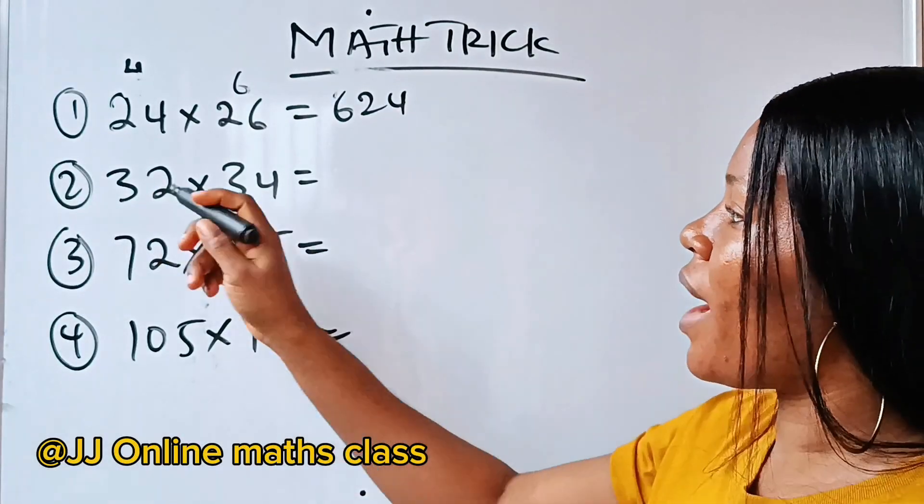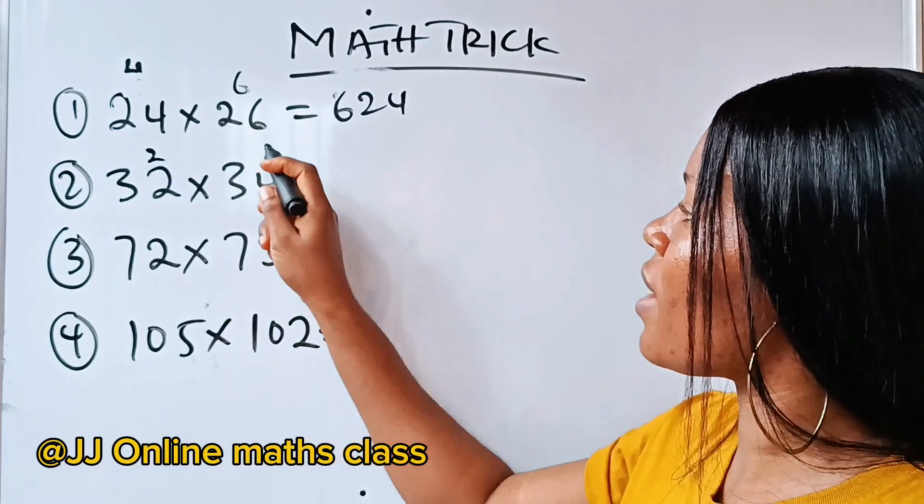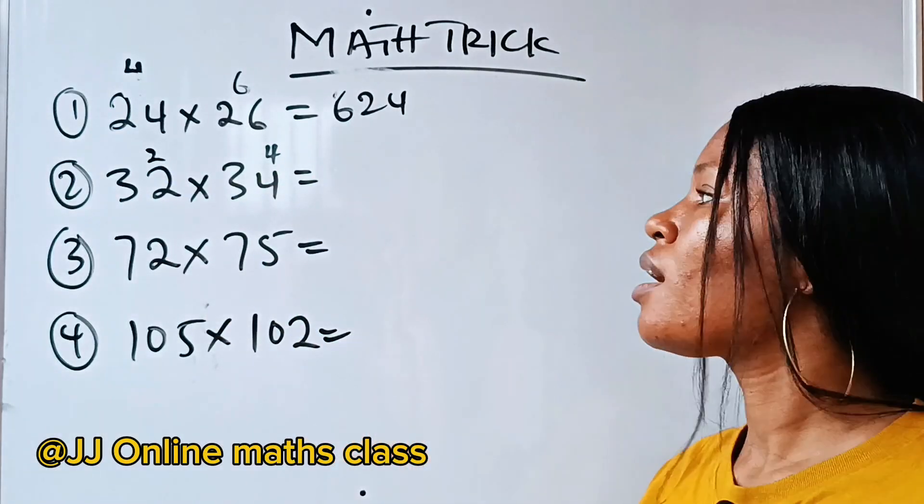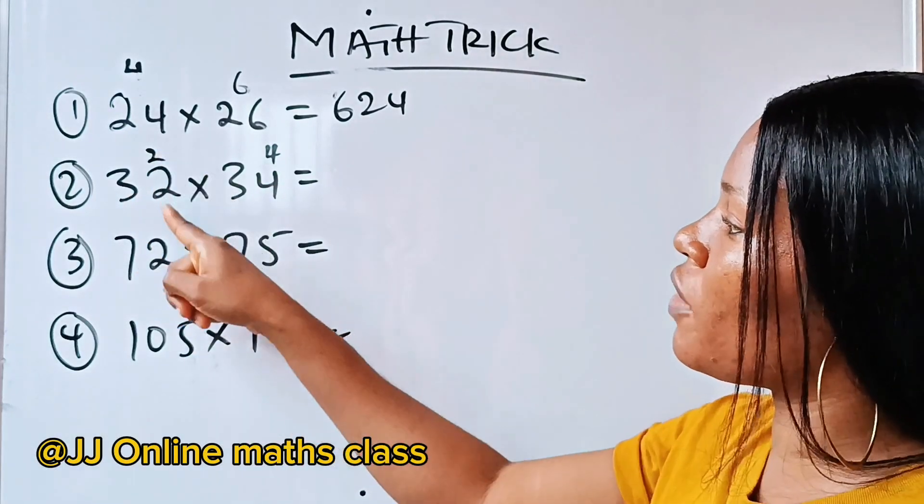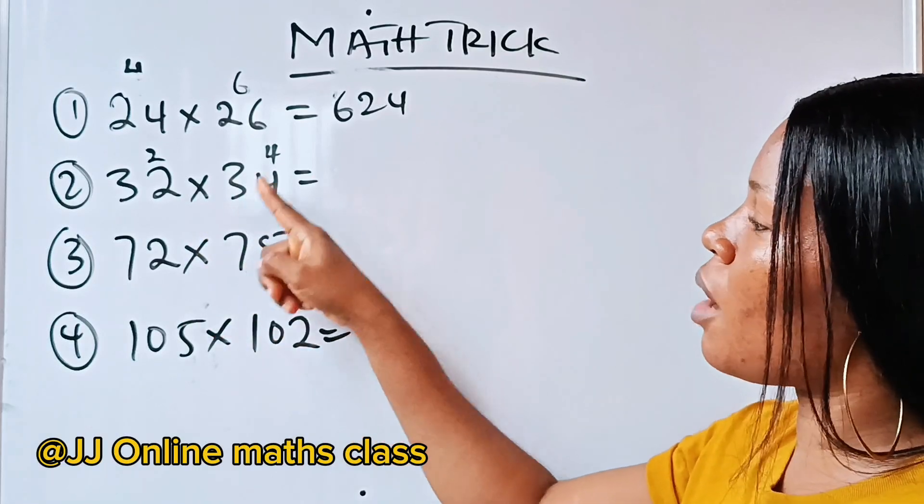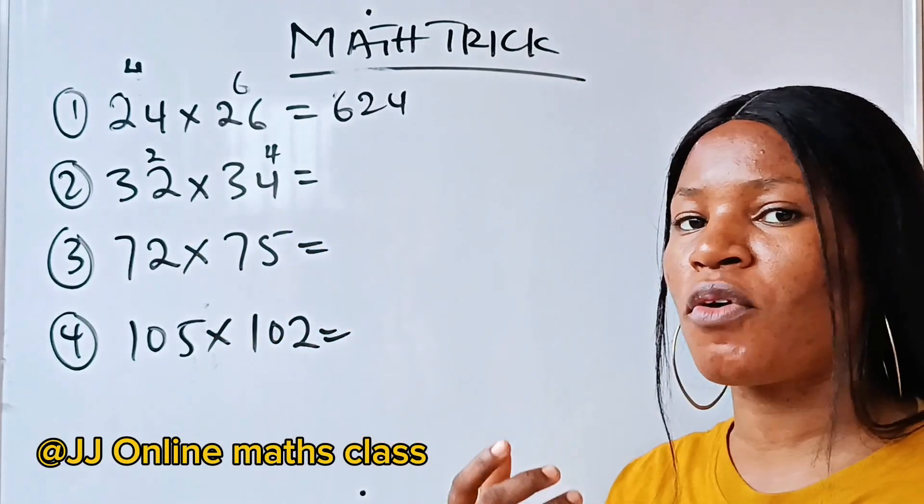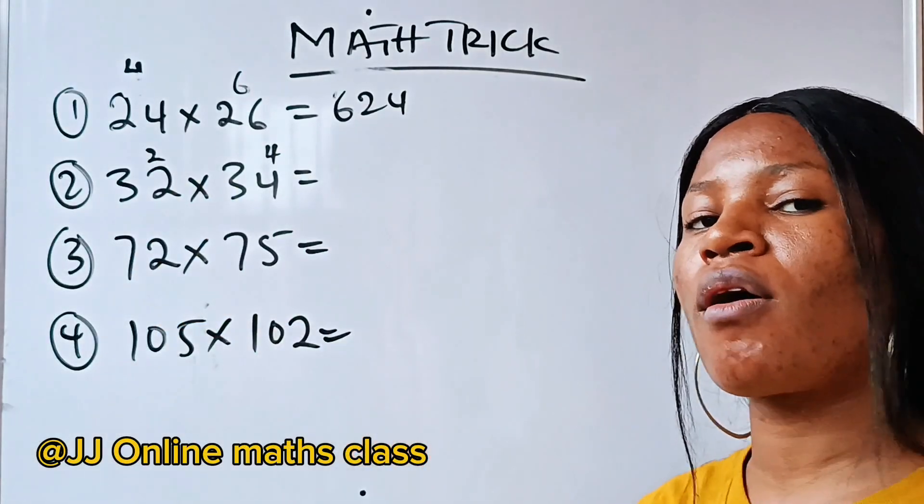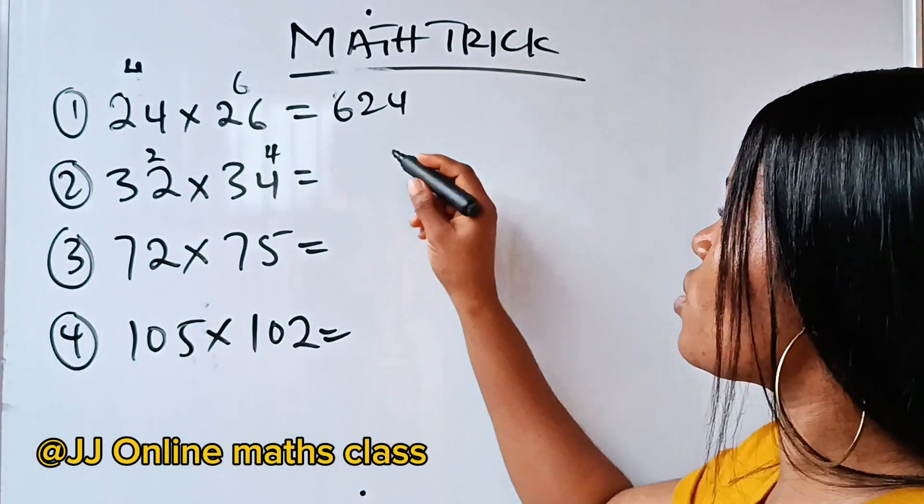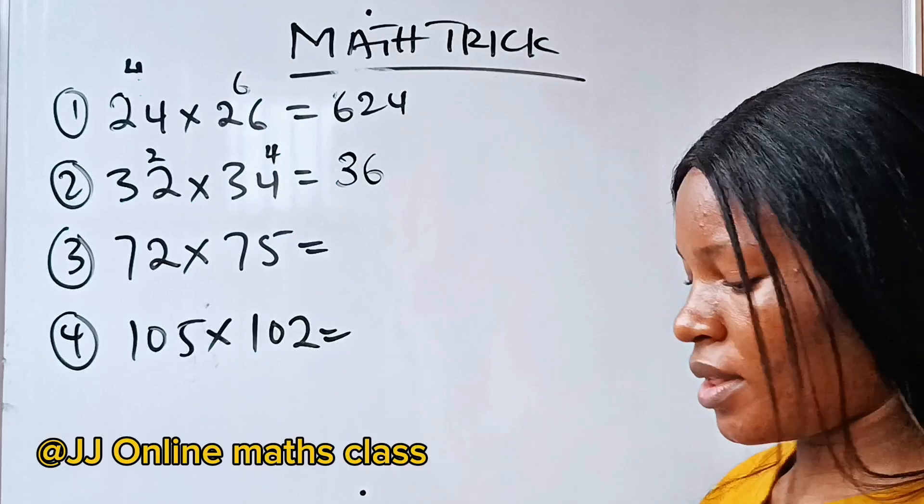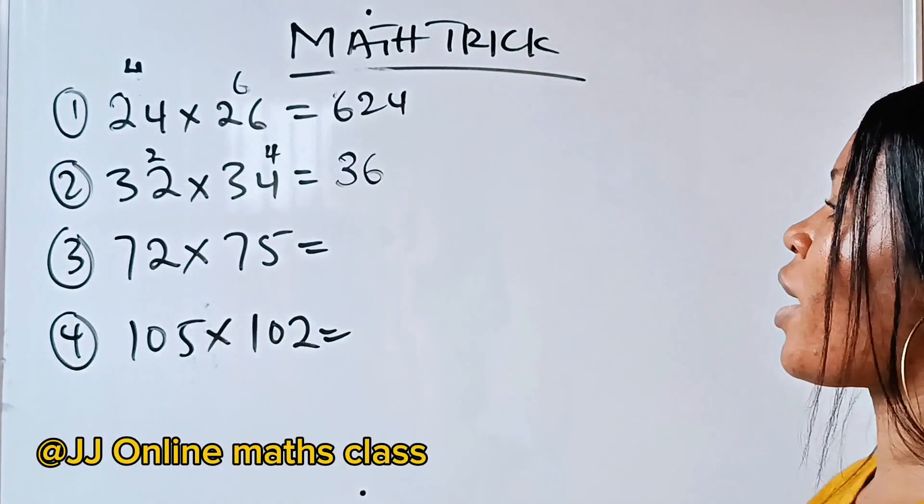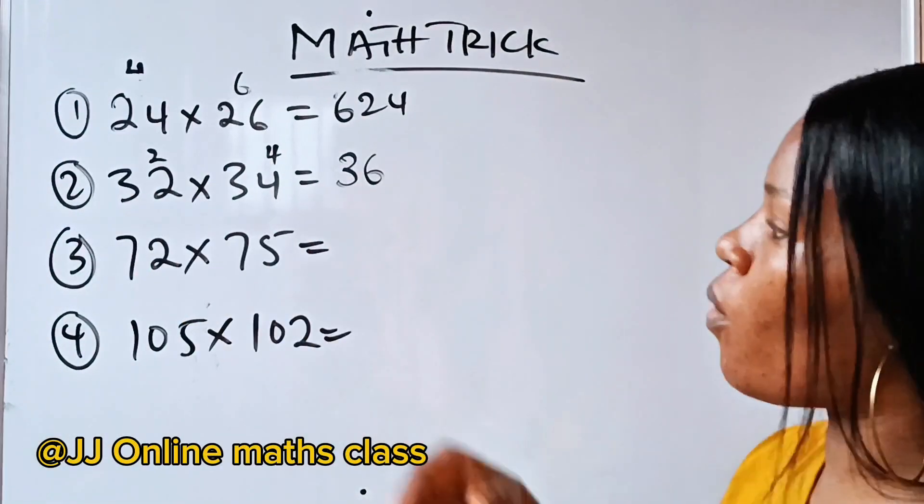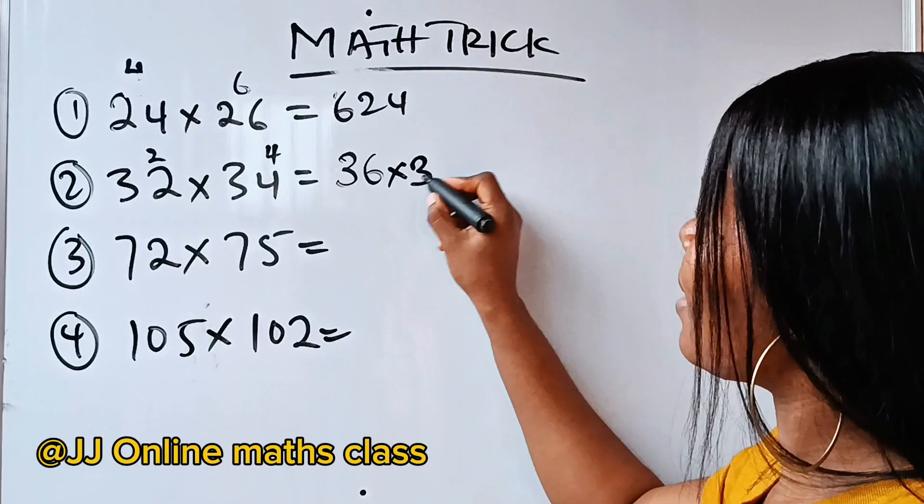Now, this one, we have extra 2 here and we have extra 4 here. 30 plus 2 will give us 32. 30 plus 4 will give us 34. Then, what do you do next? We are going to add 32 plus 4 will give us 36. So, we have 36. Now, we are going to multiply this 36 by 3.